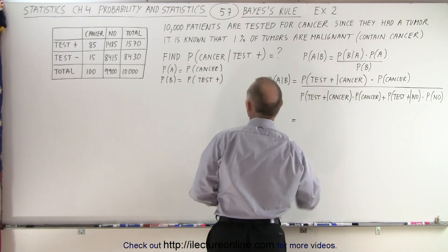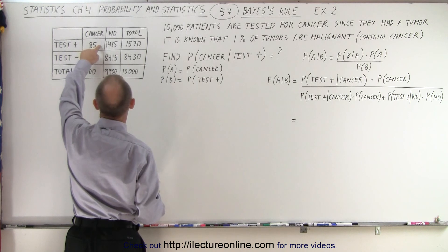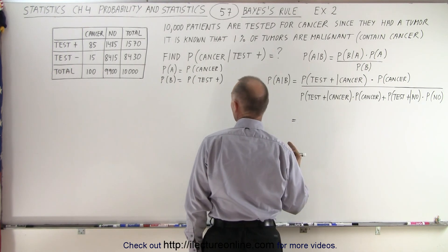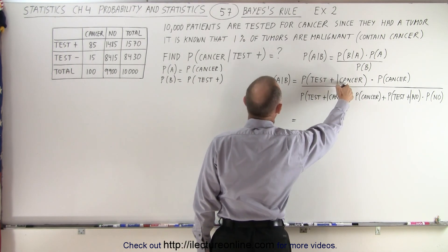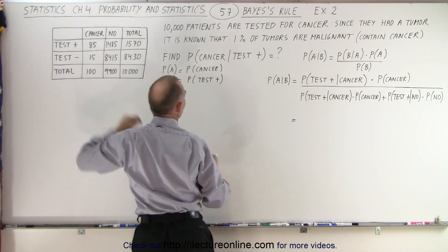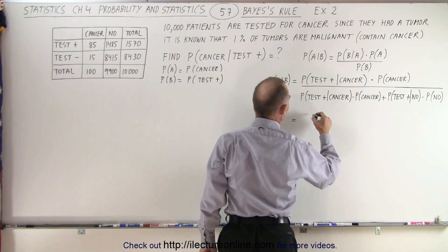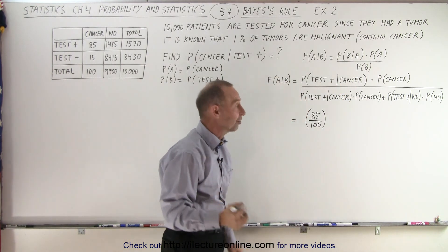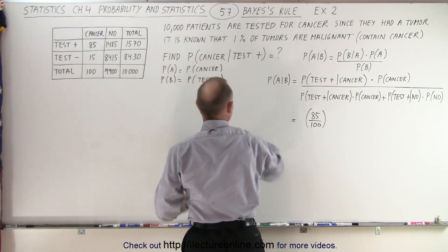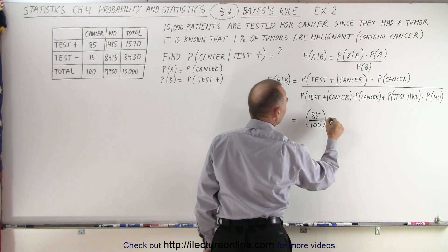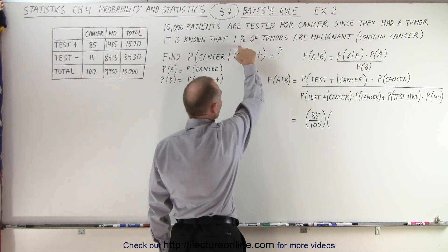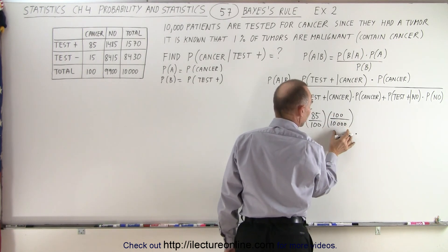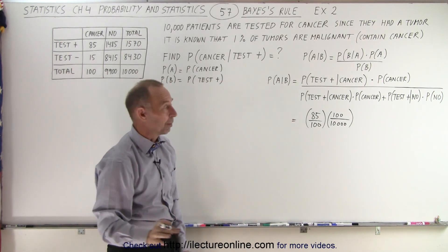The probability of testing positive given the patient has cancer: of the 100 patients who have cancer, 85 will test positive, so that's 85 out of 100. We multiply that times the probability of having cancer, which is 1%, equal to 100 out of 10,000. So 1% of all patients have cancer — that is the probability of having cancer.